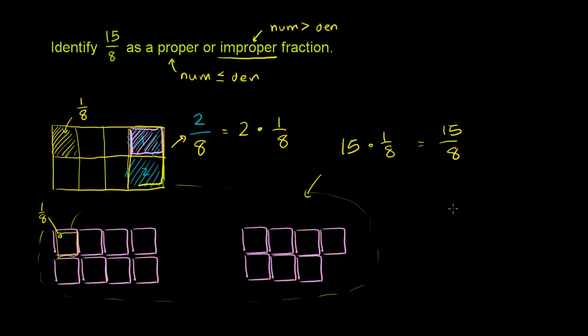Now how many pies do I have here? Well, these first 8 of the 15, this right here, that is 8 out of 8, or 8 one eighths. And that's equal to 1 whole pie. So this right here is equal to 1. That right there is equal to 1.